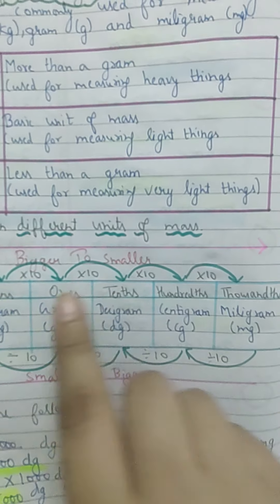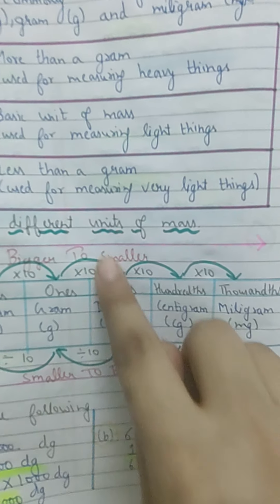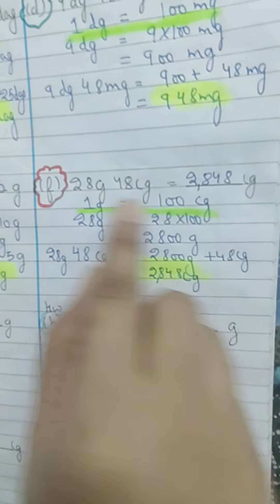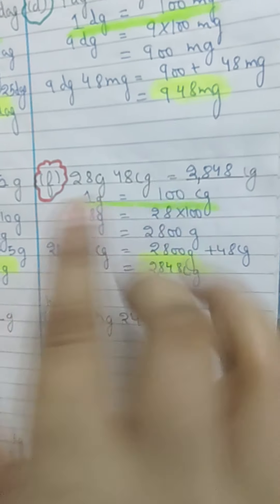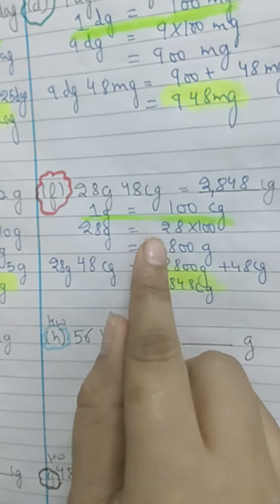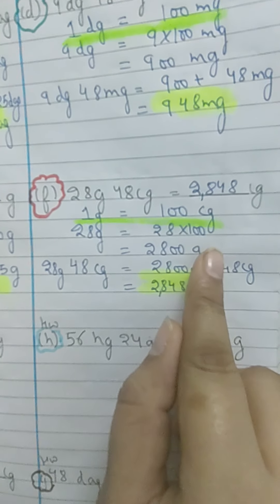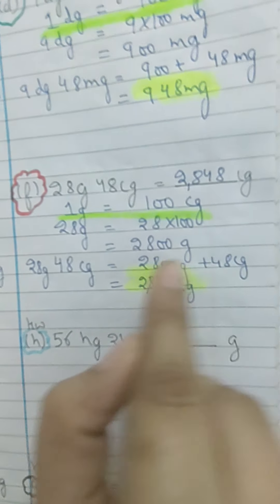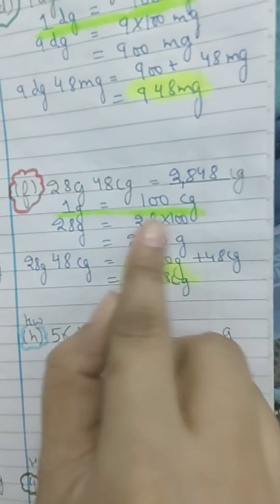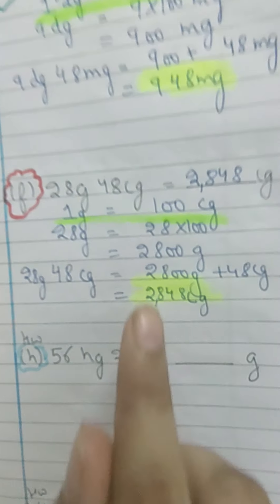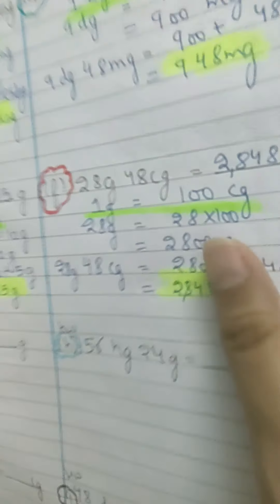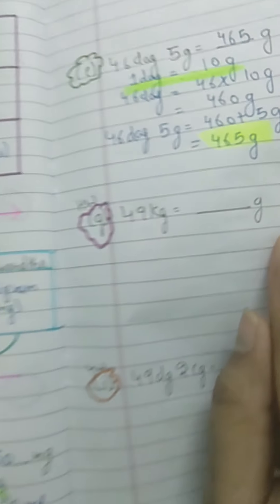Next: 28 gram 48 centigram — convert to centigram. From gram to centigram: gram → decigram → centigram — two jumps, so multiply by 100. 1 gram equals 100 centigrams. So 28 gram = 28 × 100 = 2,800 centigrams. Then 2,800 + 48 = 2,848 centigram.